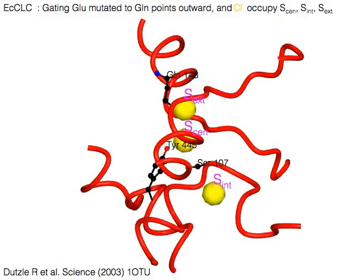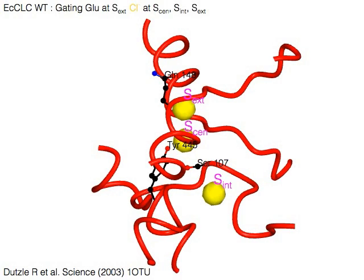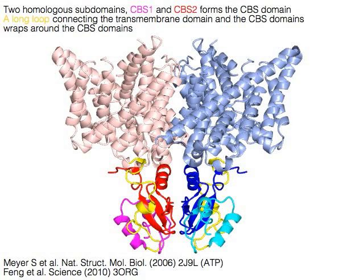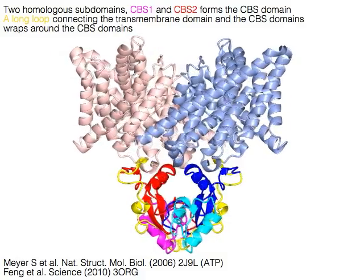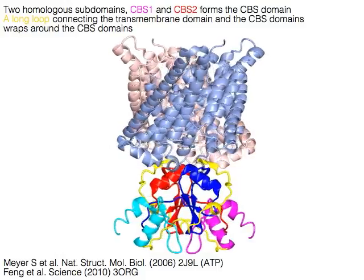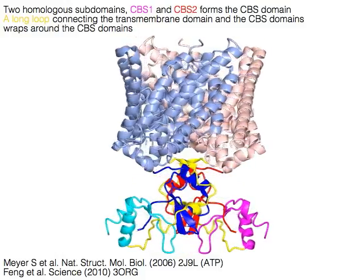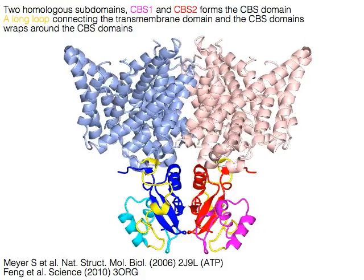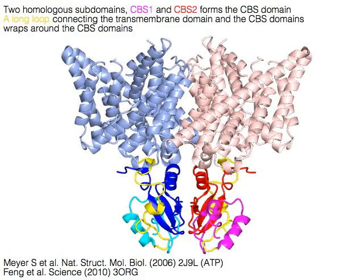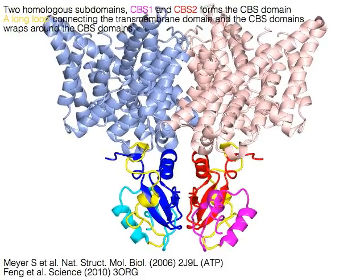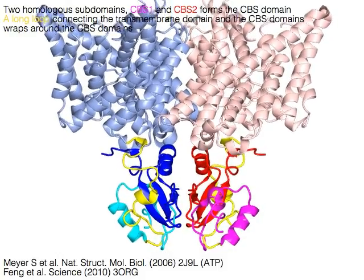Glutamate will start pushing the chloride ion again from this state. The CBS domain of eukaryotic CLC chloride channel or transporter consists of two homologous subdomains: CBS1 in magenta or cyan and CBS2 in red or orange. A yellow long loop connecting the transmembrane domain and the CBS domain wraps around the CBS domain.